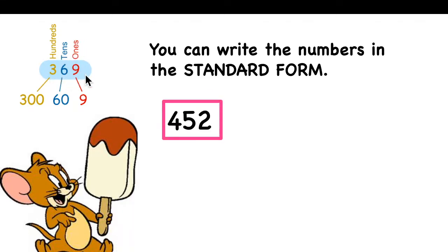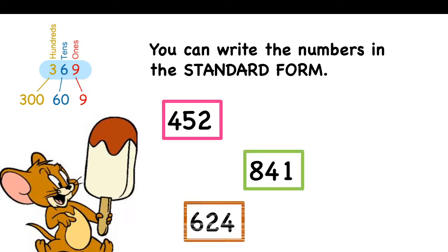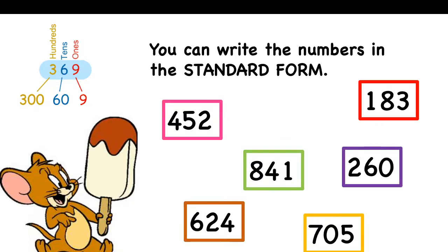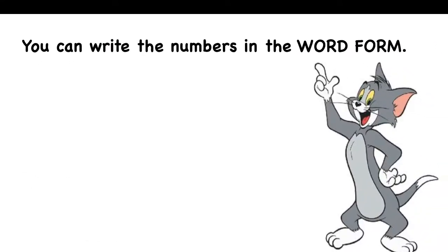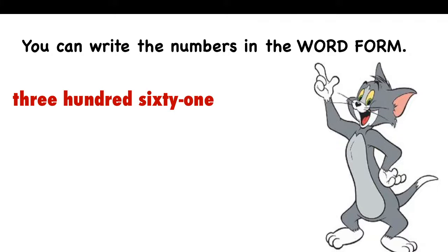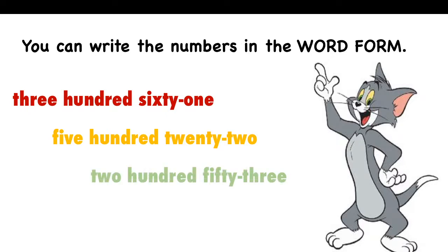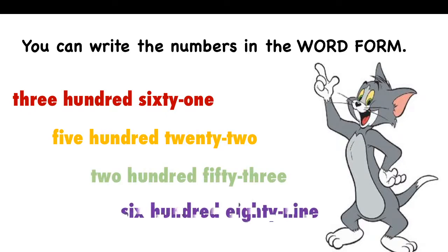Here are more standard numbers. We can also write numbers in the word form, like this: three hundred sixty-one, five hundred twenty-two, two hundred fifty-three, six hundred eighty-nine. This is the word form.